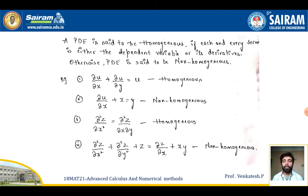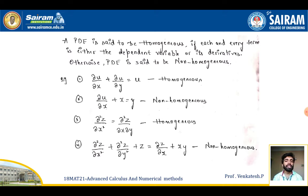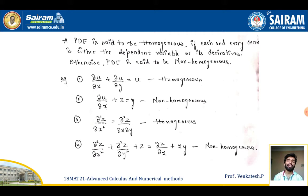Before solving the problems we will see what is meant by homogeneous and non-homogeneous partial differential equations. A partial differential equation is said to be homogeneous if each and every term is either the dependent variable or its derivatives. Otherwise the PDE is said to be non-homogeneous. For example, ∂u/∂x + ∂u/∂y = u is homogeneous, while ∂u/∂x + x = y is non-homogeneous.